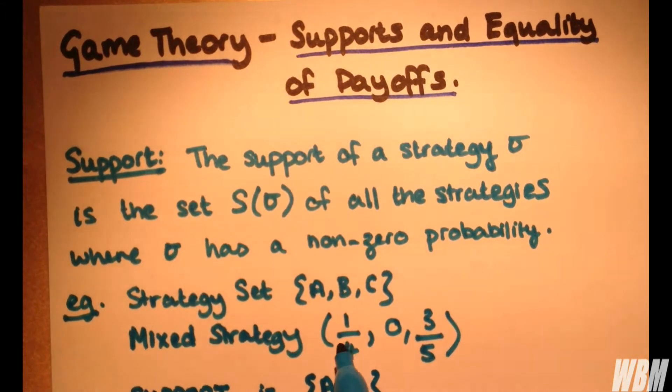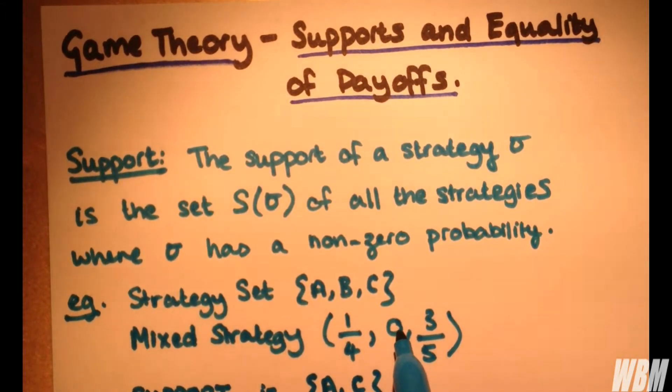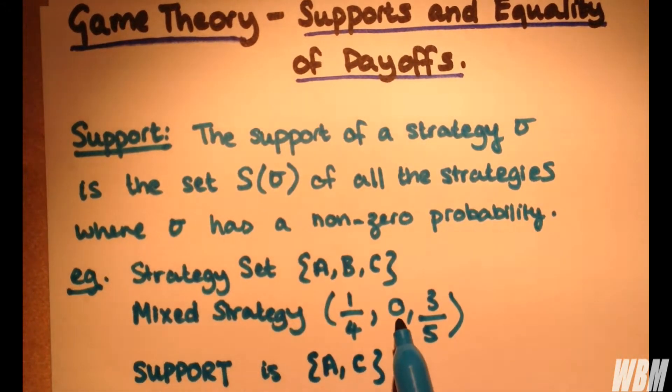So we have A, B which we omit because it's 0, and C. So far, so straightforward.